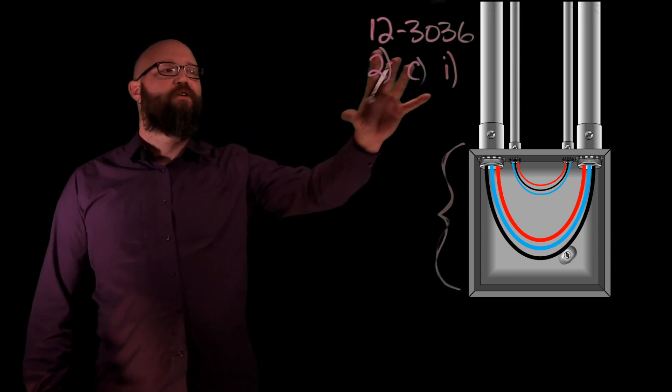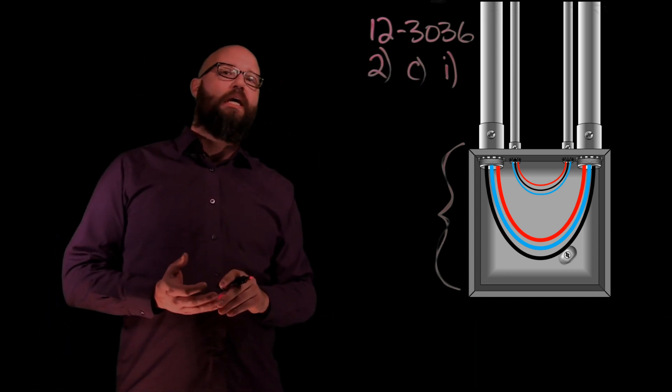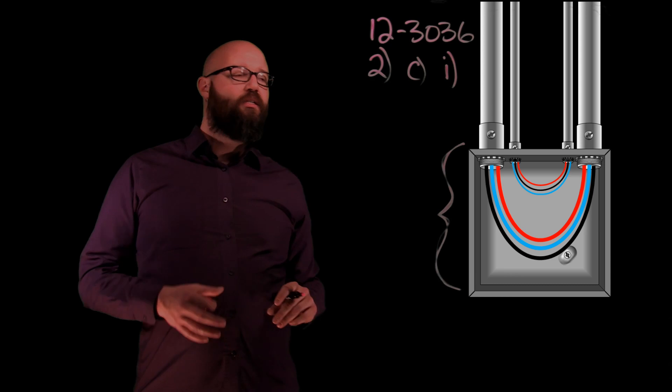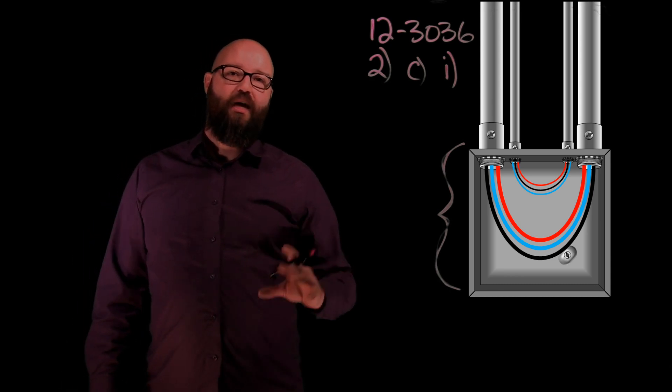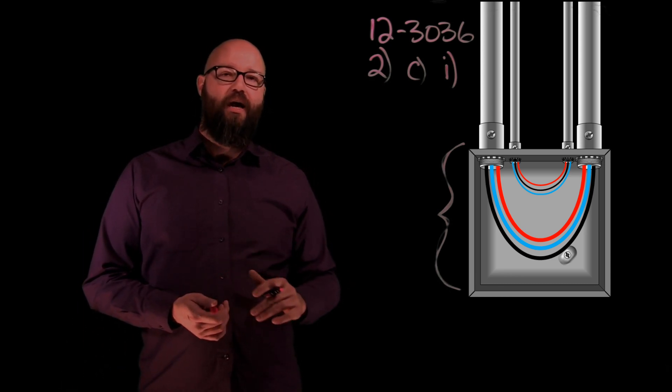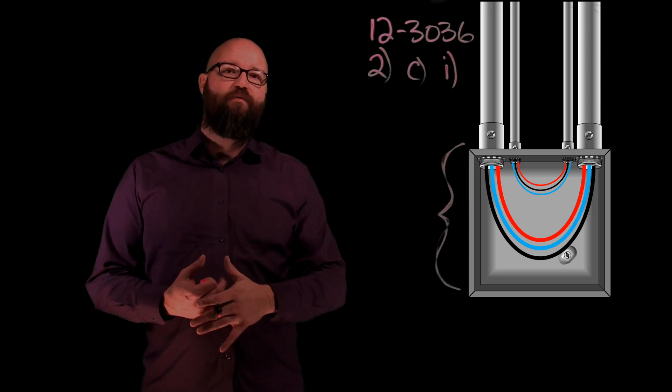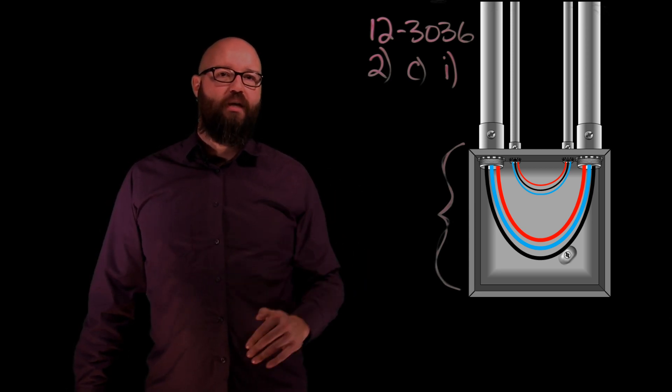So if we take a look at 12-3036 item 2C I, what it tells us is that we're going to take six times the largest trade size diameter and we're going to add the rest of the trade size diameters that are on that same wall.